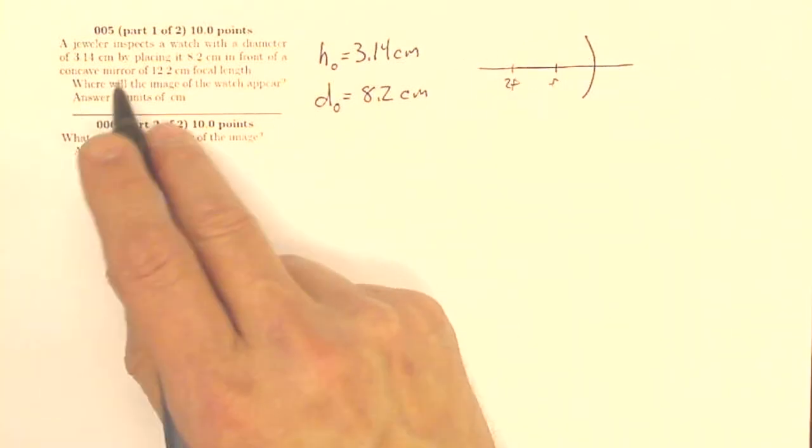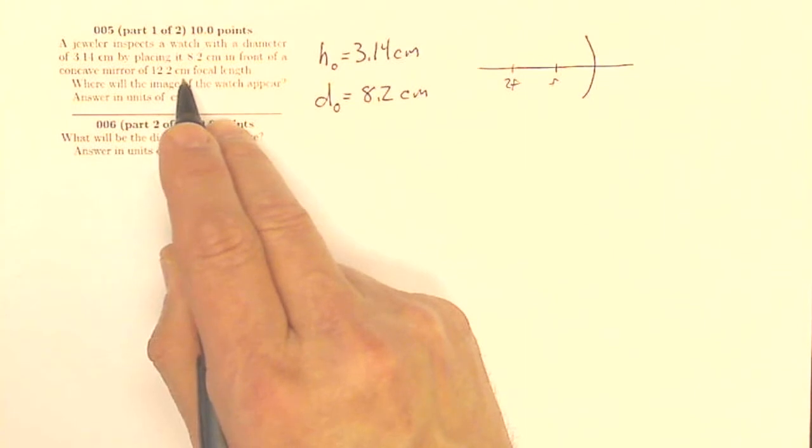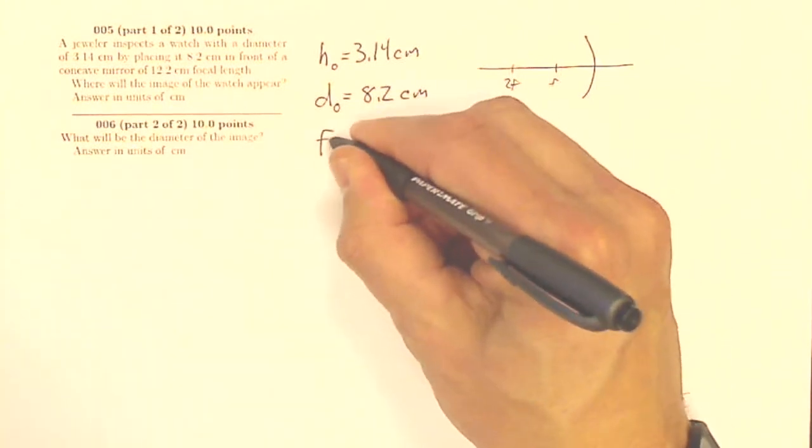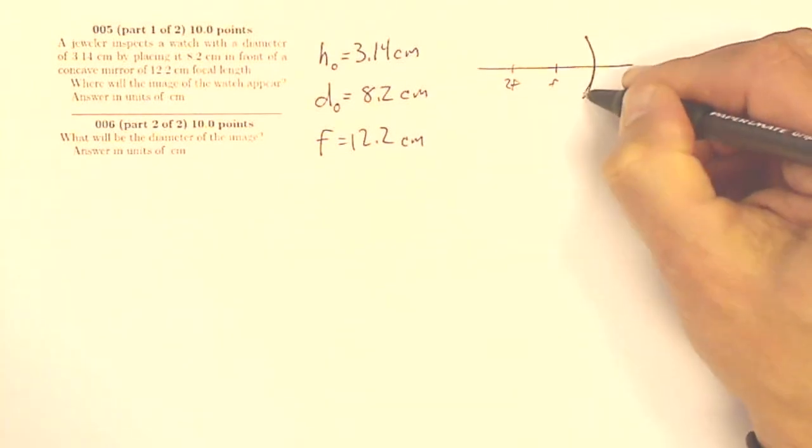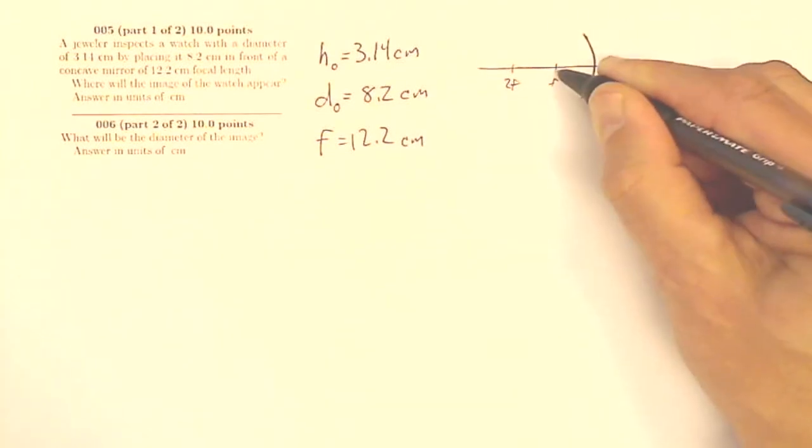Concave mirror of 12.2 centimeter focal length. So that means my focal length is 12.2 centimeters. Since this is a converging mirror, it's going to have a positive focal length.